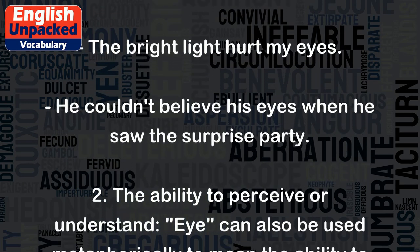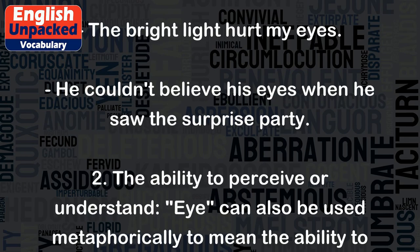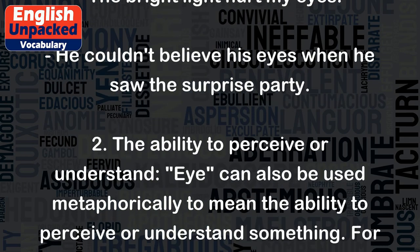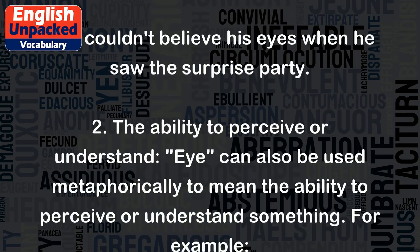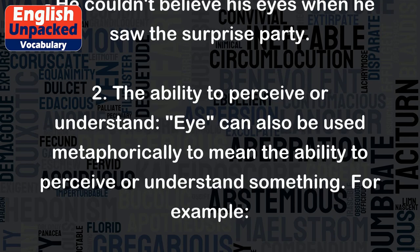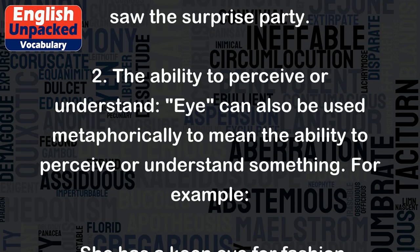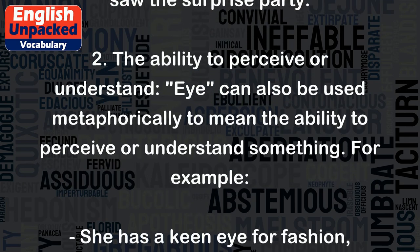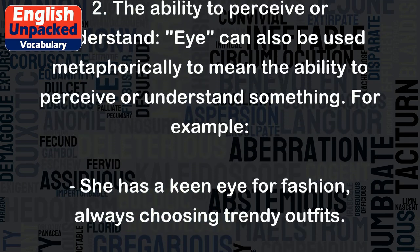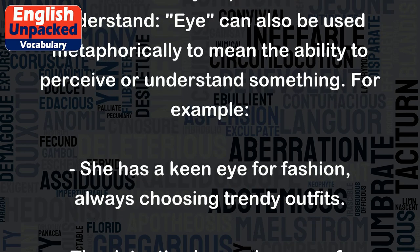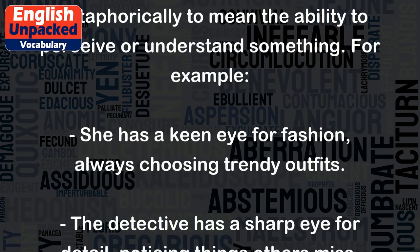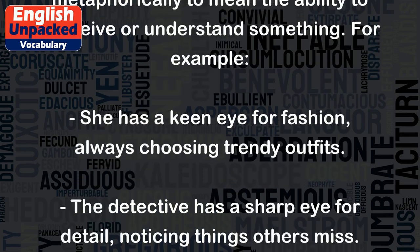2. The Ability to Perceive or Understand. Eye can also be used metaphorically to mean the ability to perceive or understand something. For example, she has a keen eye for fashion, always choosing trendy outfits.